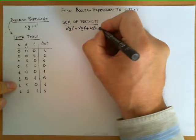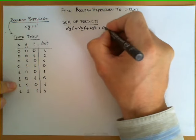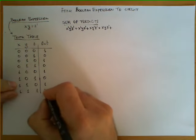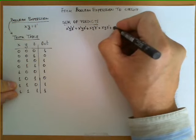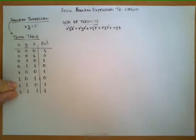This row will be x y z prime, and the last row with a one here will give x y and z.